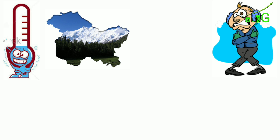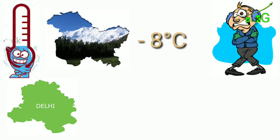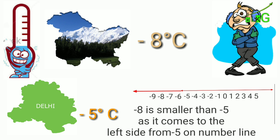And the temperature of Delhi is minus 5 degrees, so which number comes to the most left side? Minus 8. It means the minus 8 value is lower than minus 5.